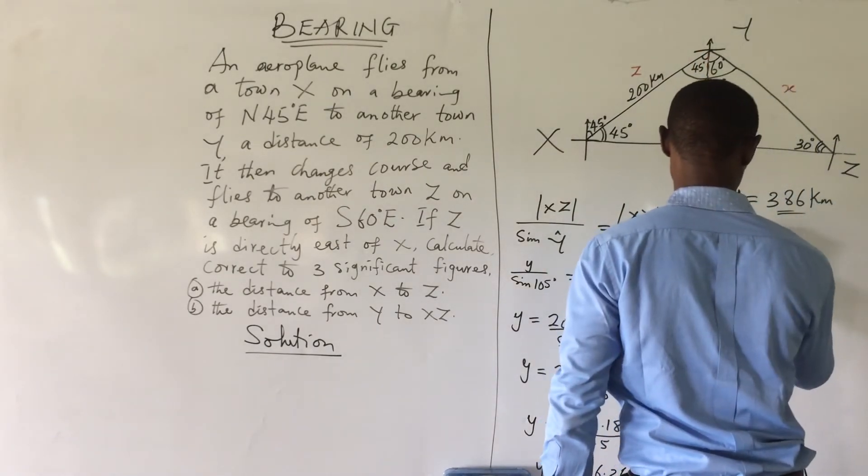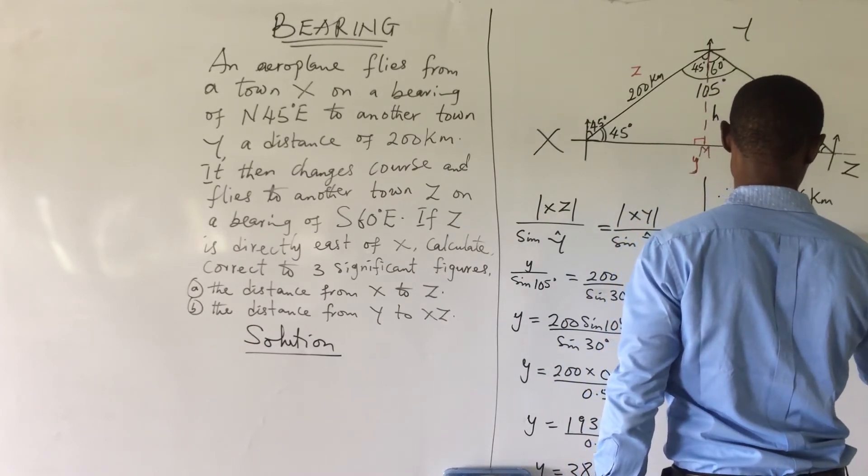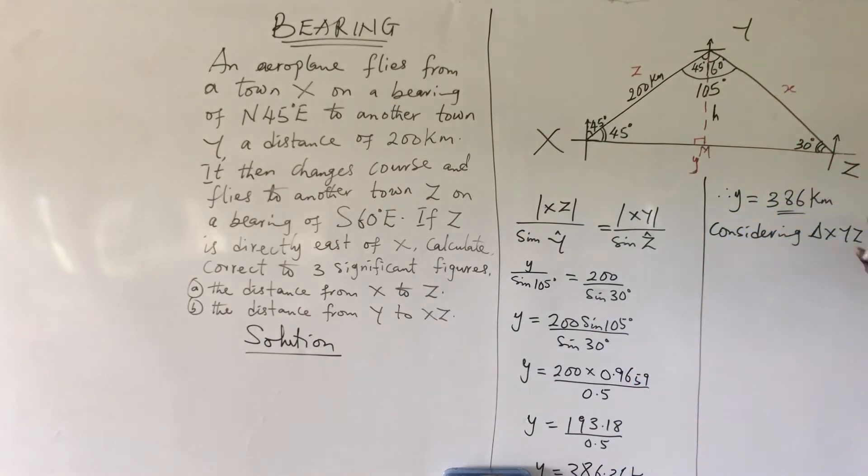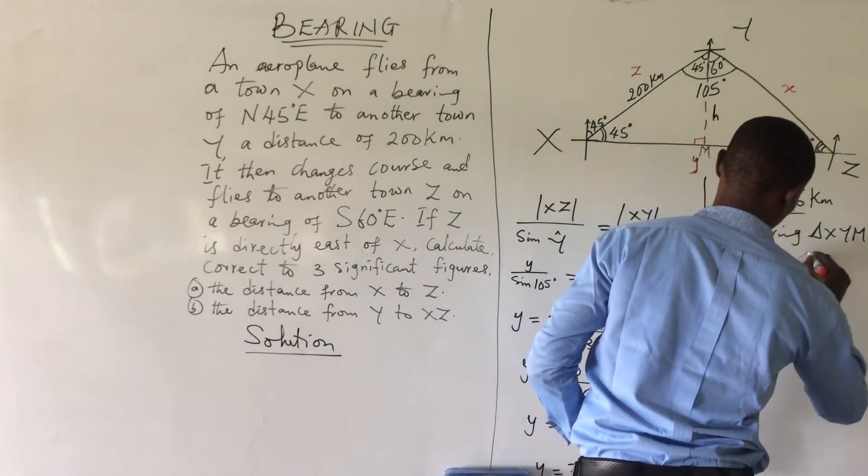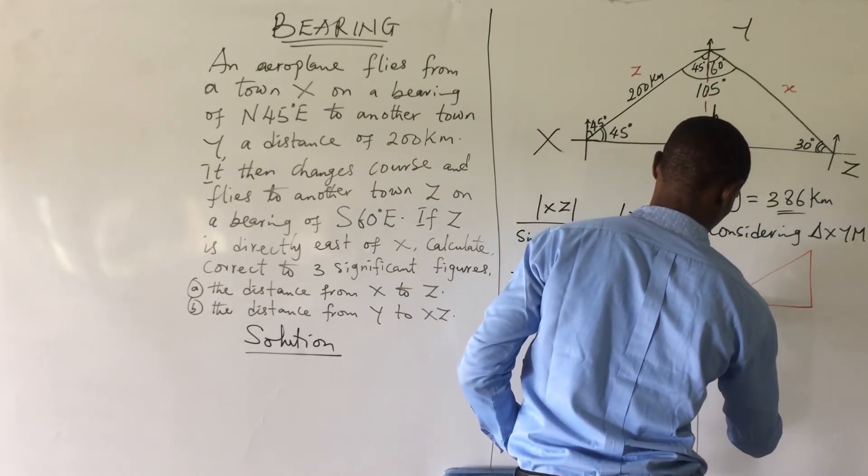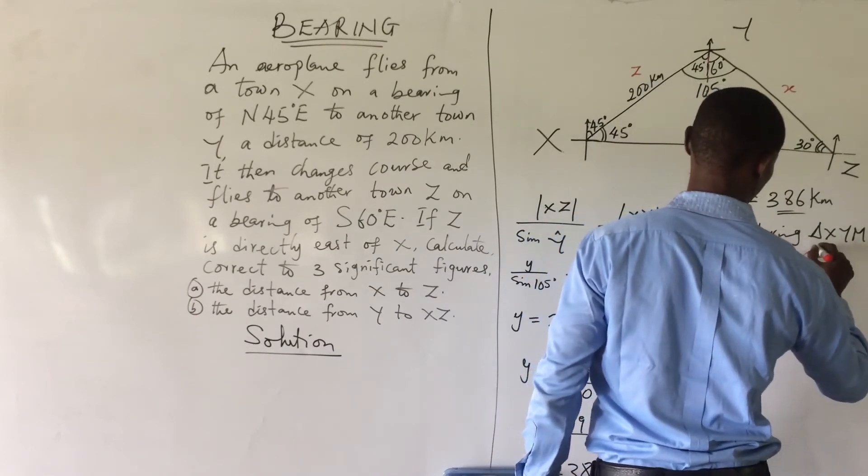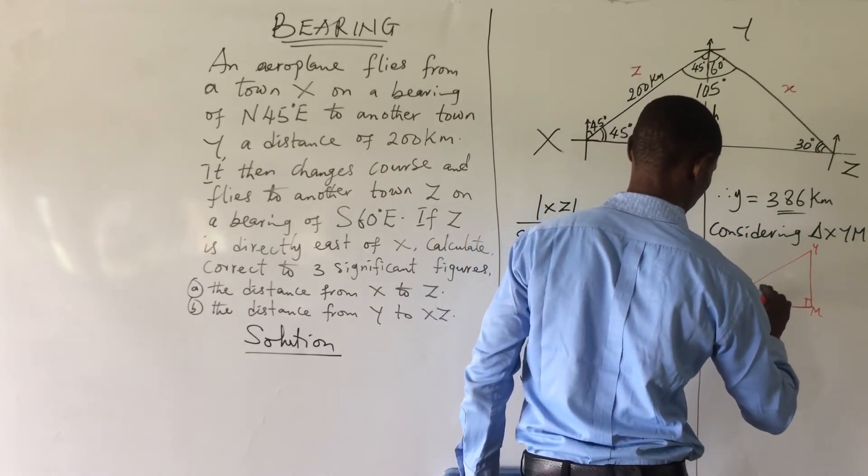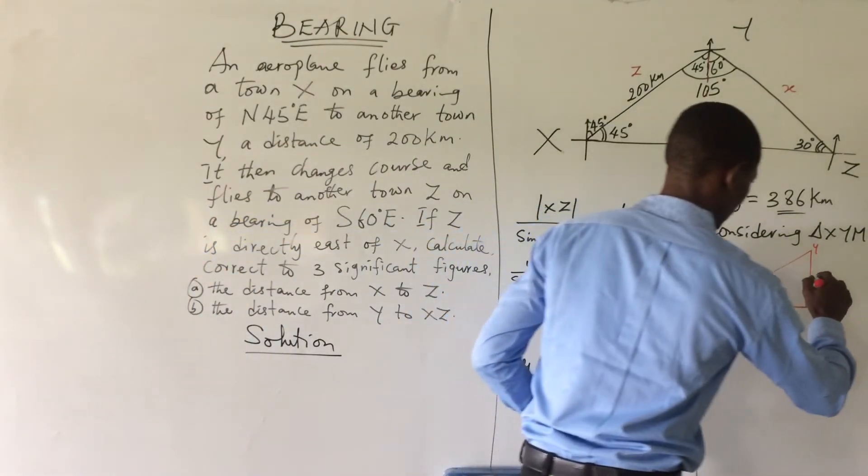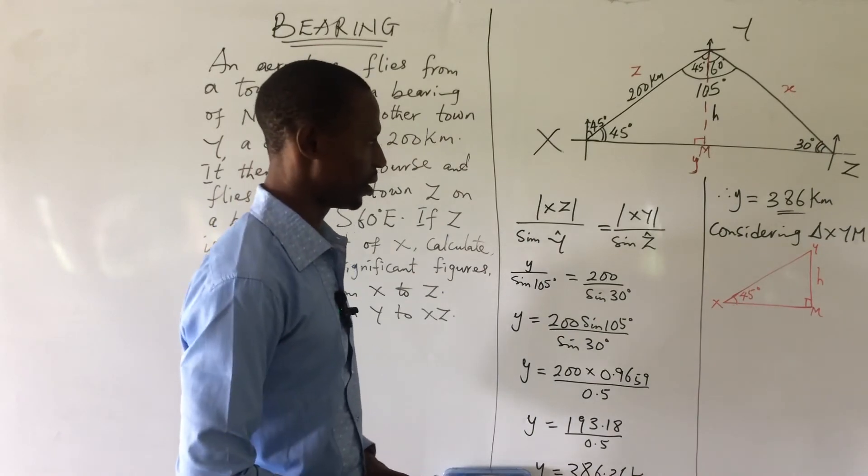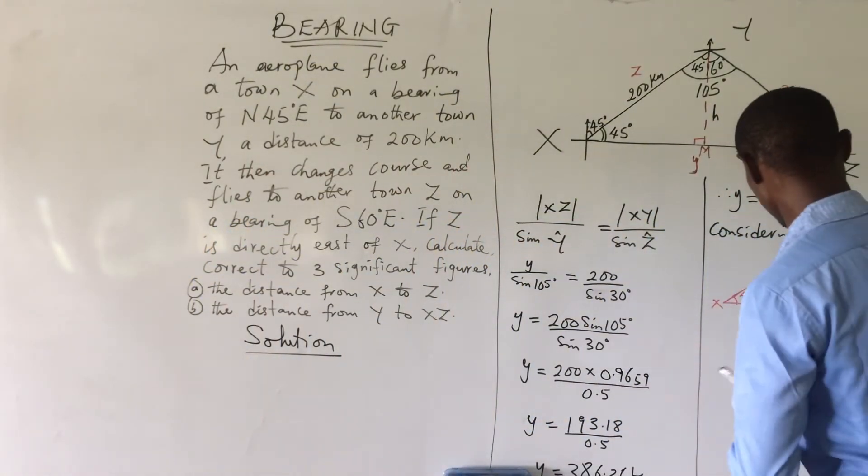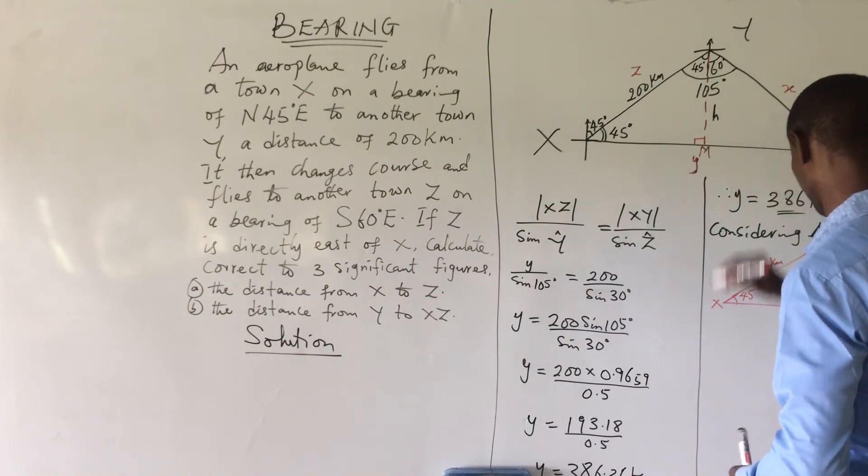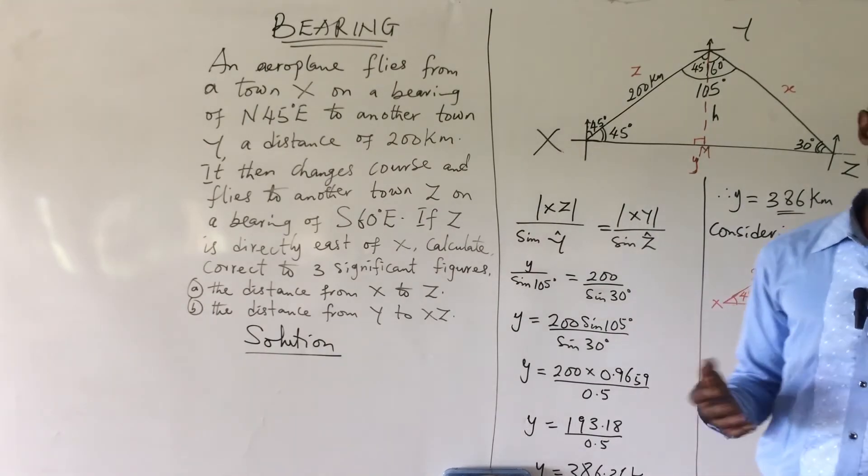Now, taking a good look at this, you consider this triangle now: X, Y, M. I can say, considering triangle XYM. How do we get this? Let me bring this triangle out. Here we have X, here we have Y, and here we have M. Here we have 90 degrees and here we have 45 degrees. Now, taking a good look at this, this is what we're looking for: H. From here, on this side, we have 200 kilometers.